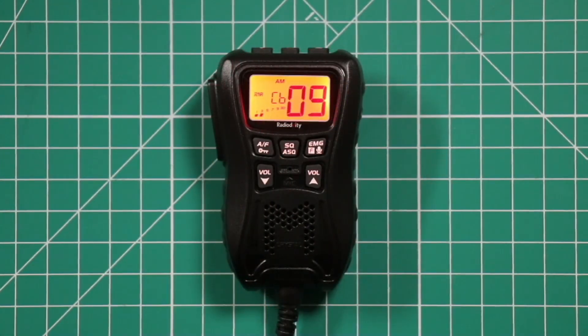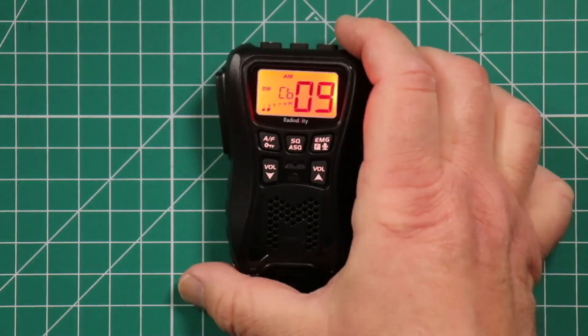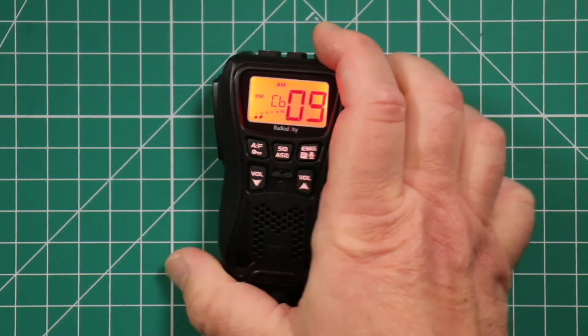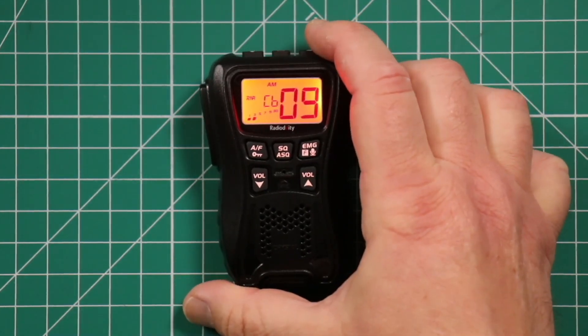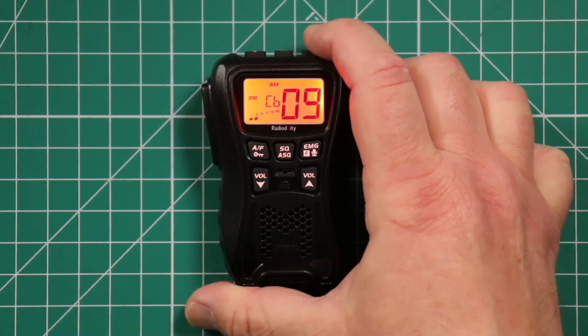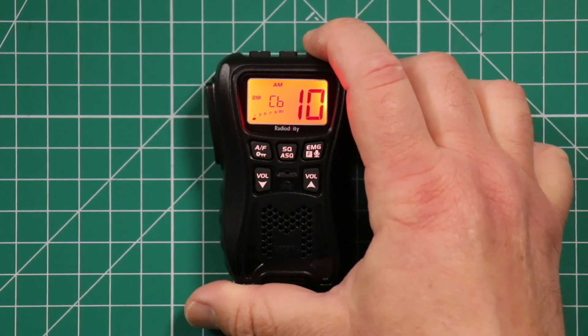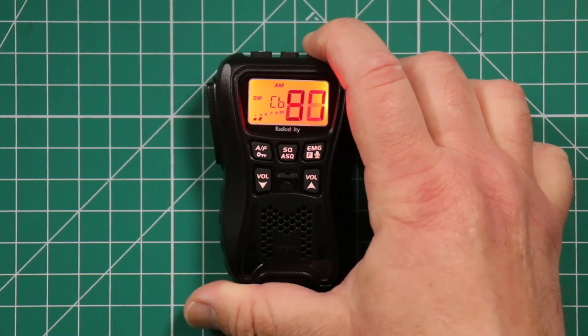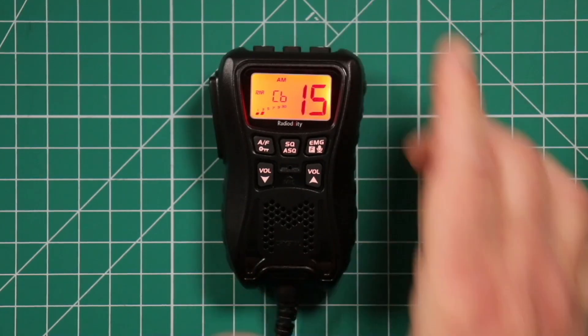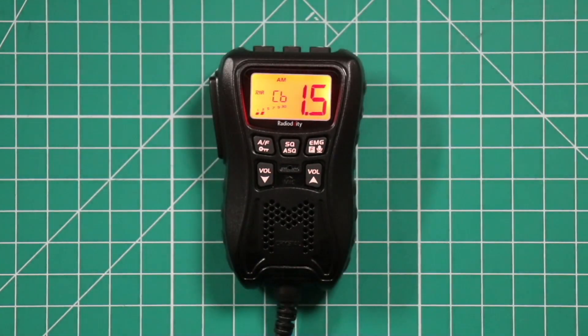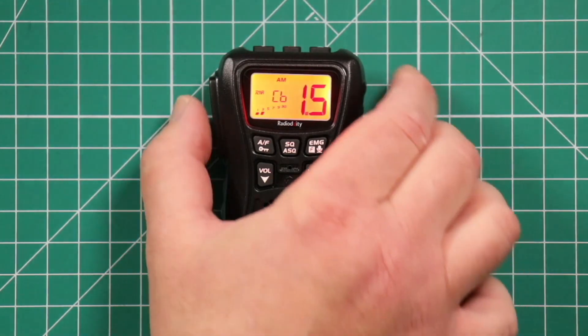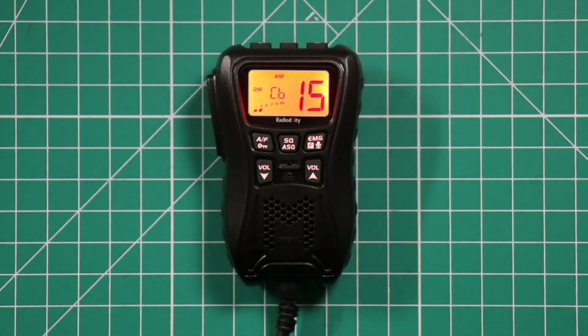If you want to scan through the channels, use the top button, top of the radio. Press and hold until you see a decimal point show up in between the zero and the nine. And then you see the decimal point flashing and it'll go through until it finds a channel that breaks squelch. Right now I have the volume down so you're not hearing anything. To get out of that, just hit the push to talk button and it takes you out of the scan mode.